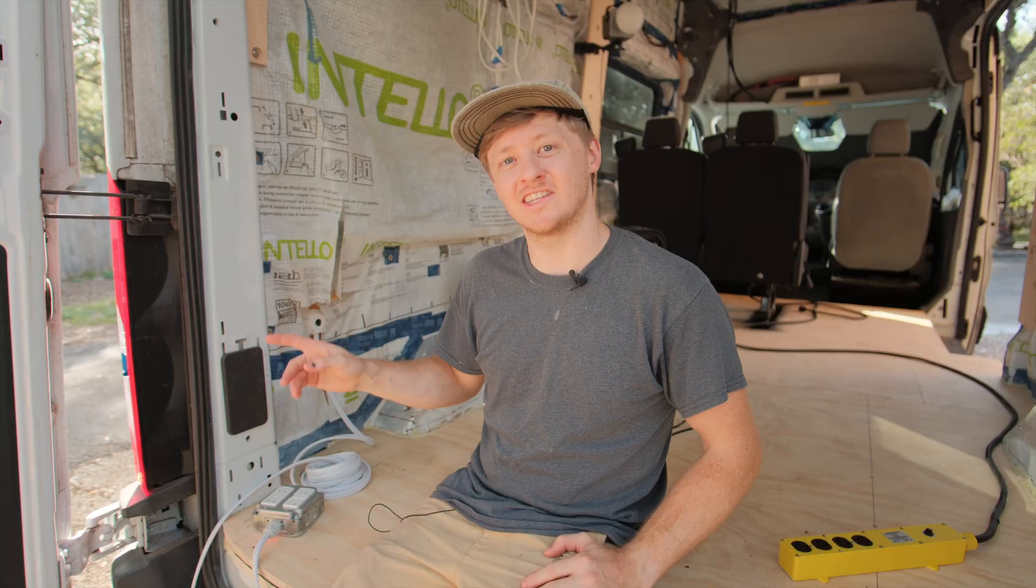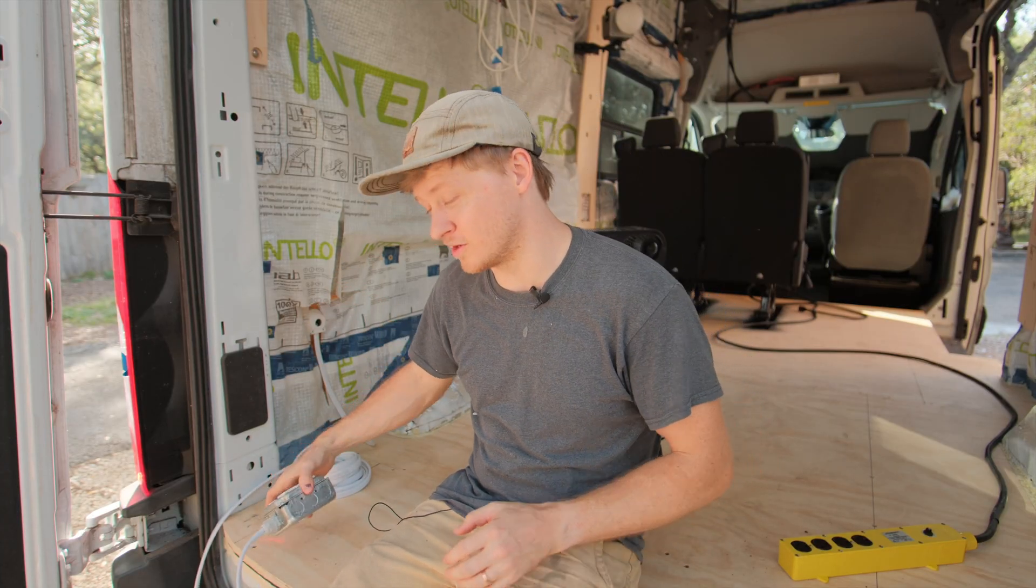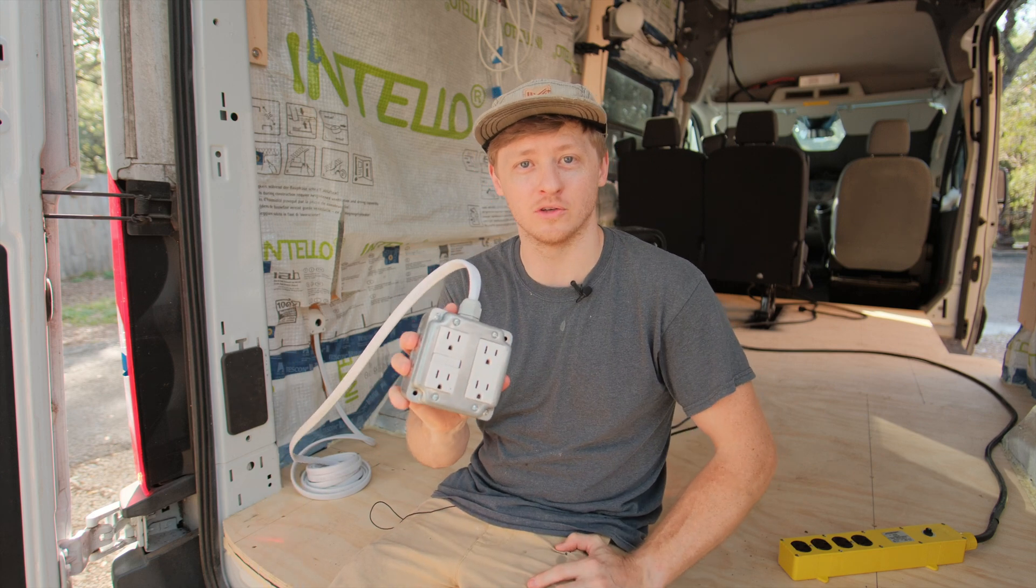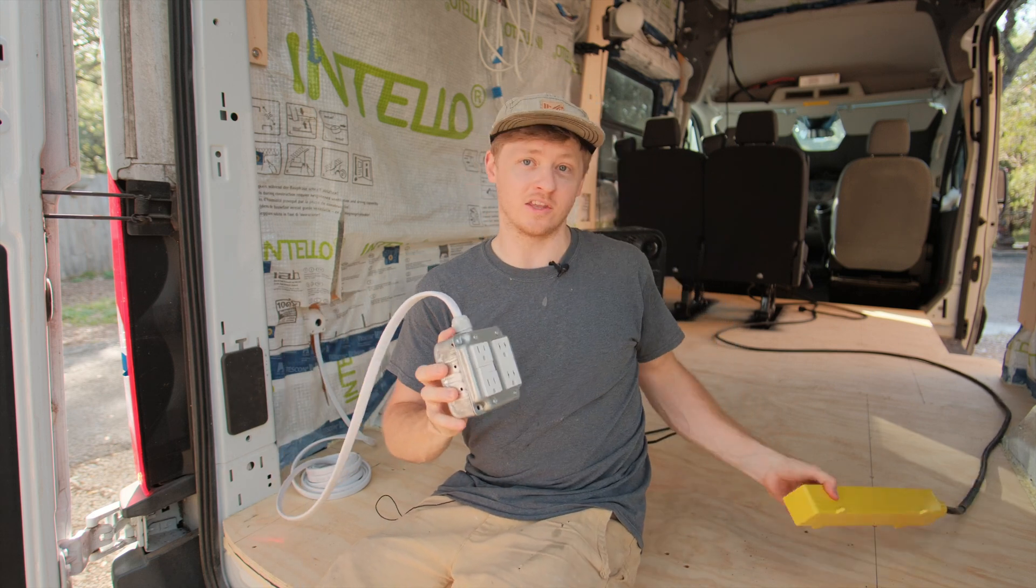I thought, why don't I go ahead and just add the shore power inlet now, earlier on in the build, rather than later when I'm working on the electrical system. And not just add the shore power inlet, but turn it into a functional, useful power strip on its own, and then I can get rid of the other one.